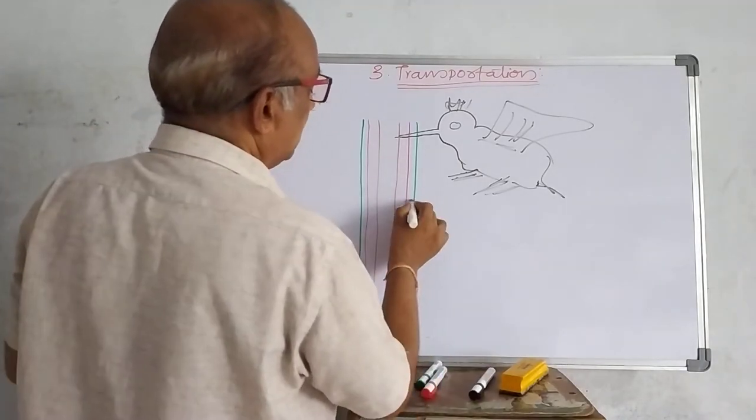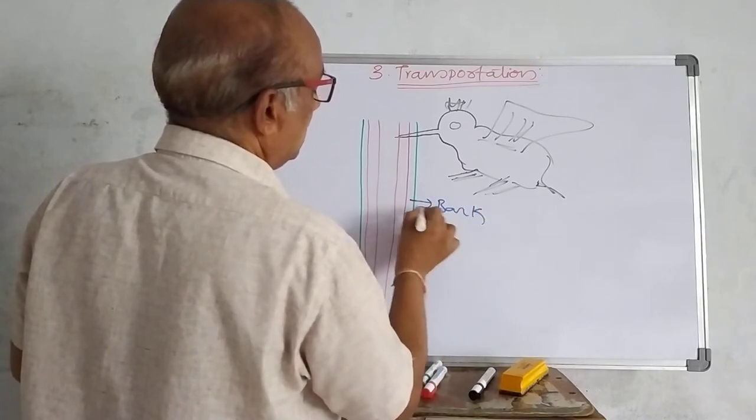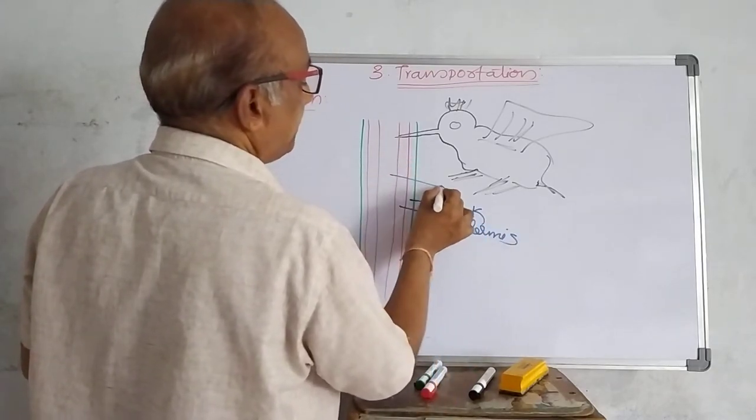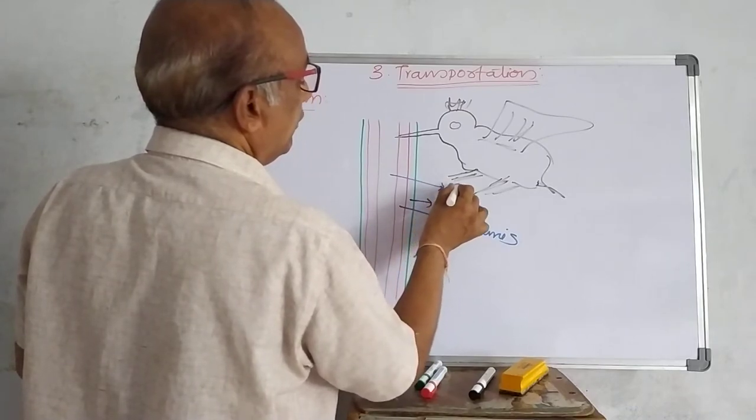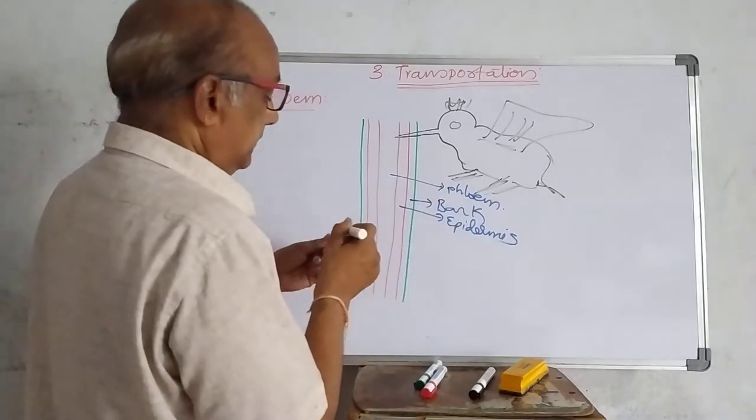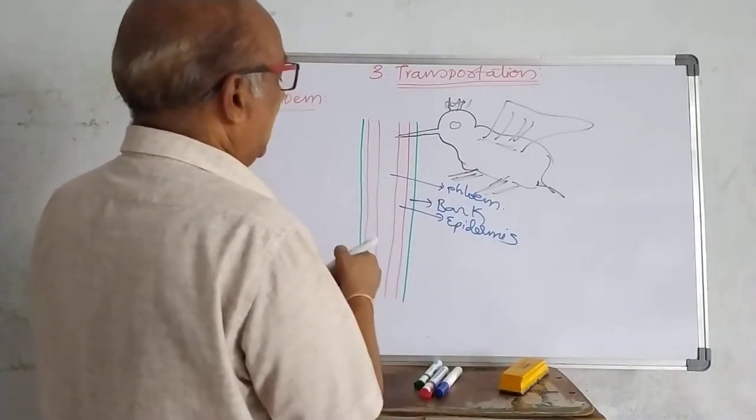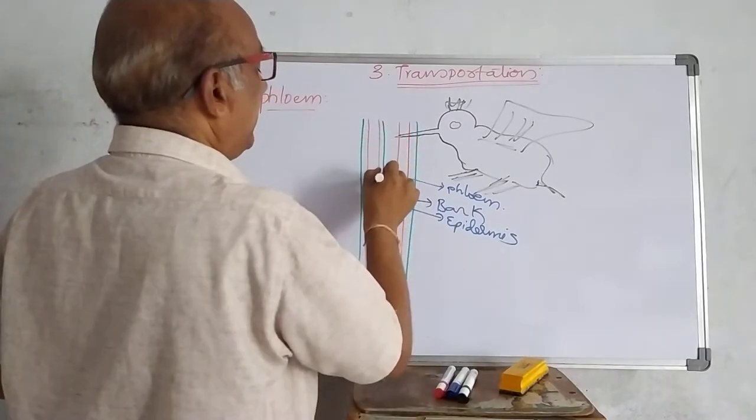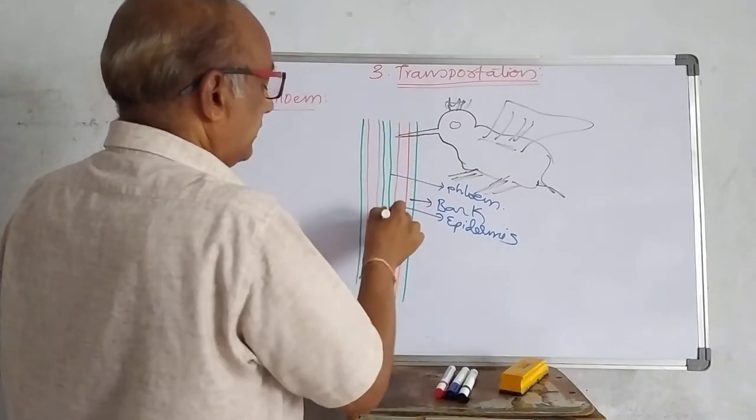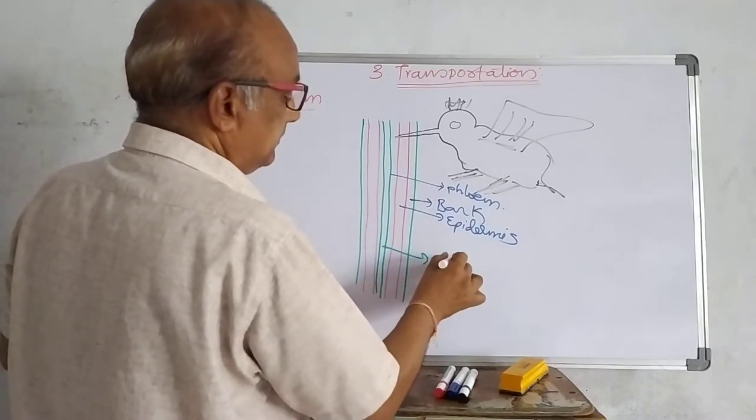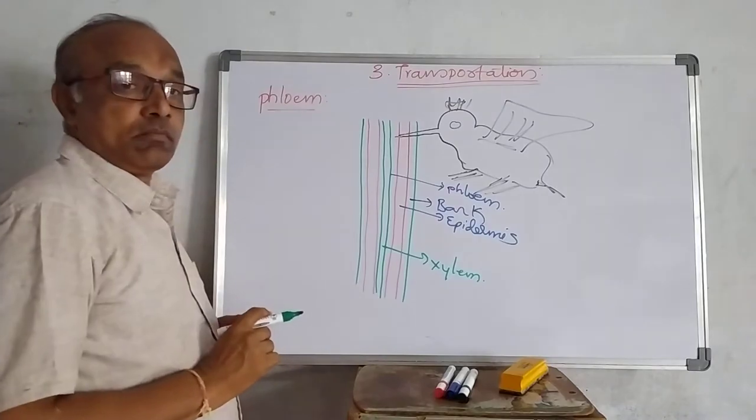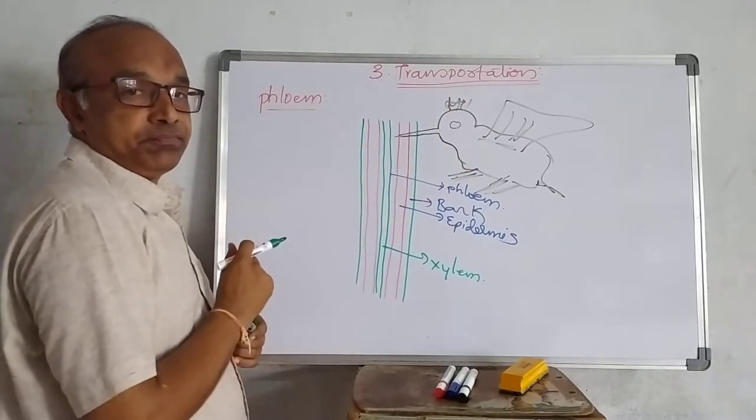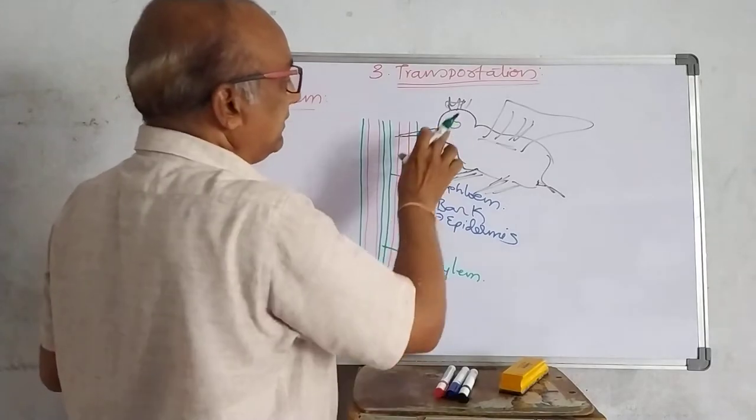This is the sharp pointed proboscis which is inserted or piercing the soft stem portion. And this is the bark. This is the epidermis. And this is the phloem. And in the middle, in the middle we can find the xylem tissue. Up to phloem region, the proboscis is piercing inside and slowly sucking the nectar.